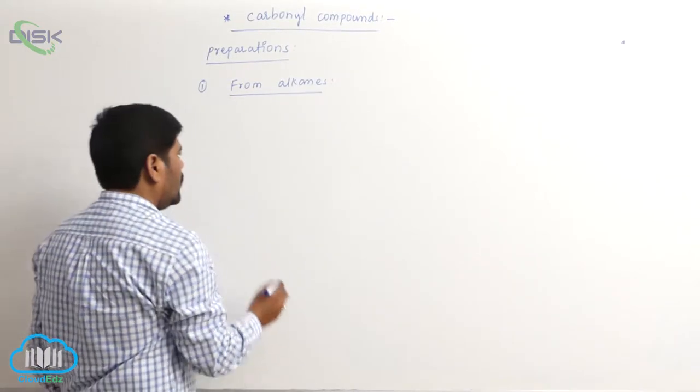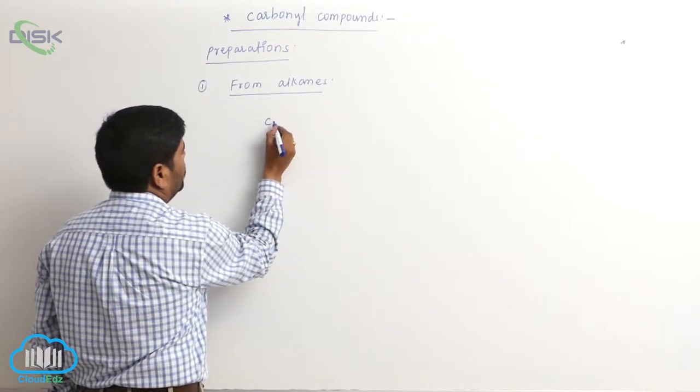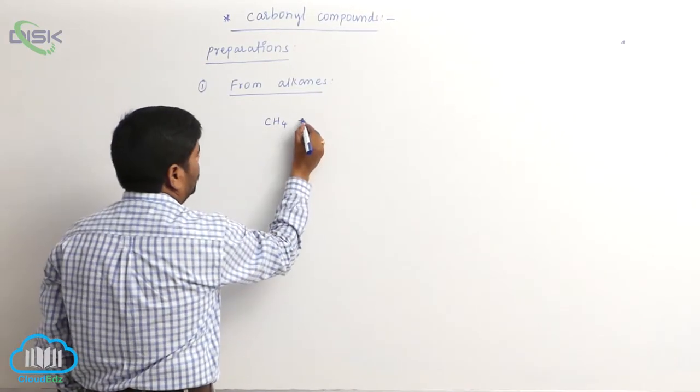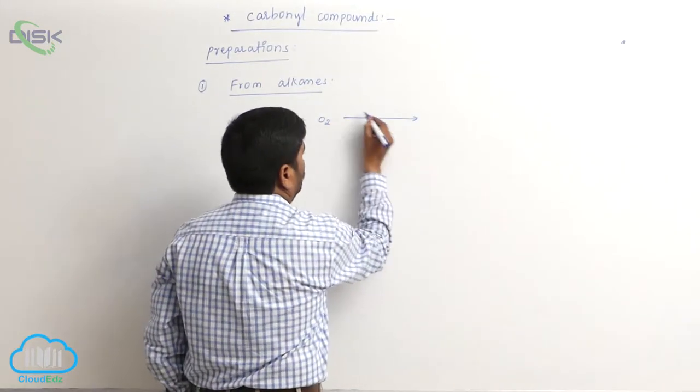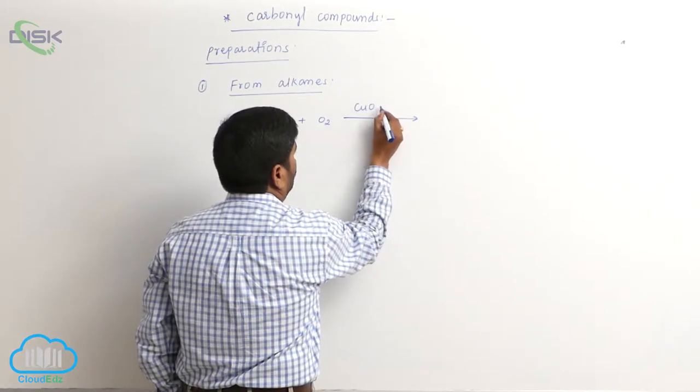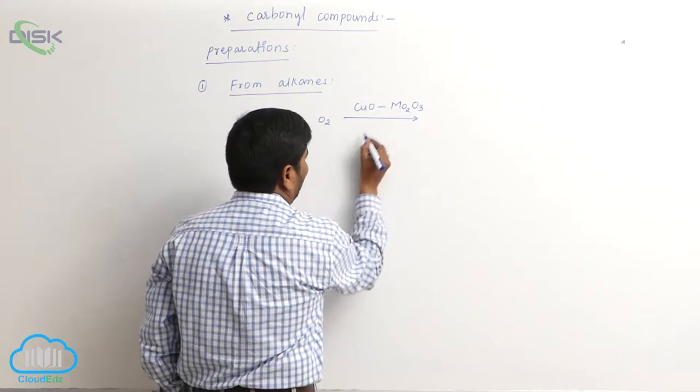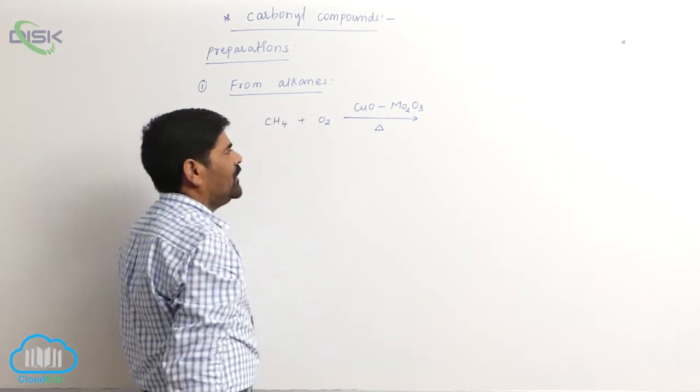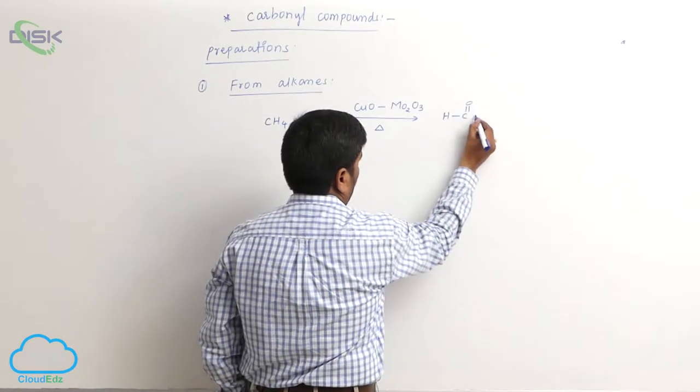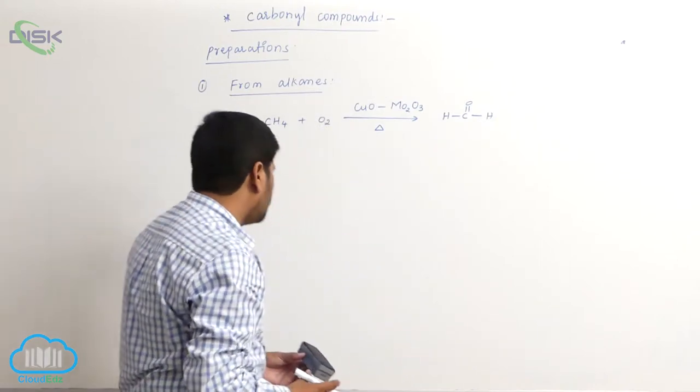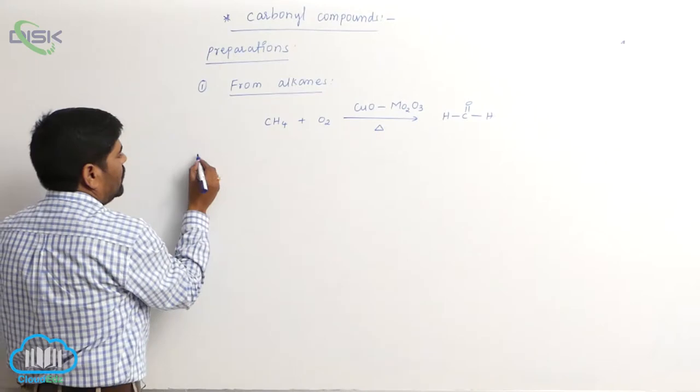When methane reacts with oxygen in the presence of cuprous oxide and molybdenum oxide as a catalyst, followed by heating, it forms formaldehyde.